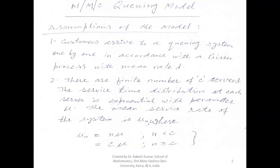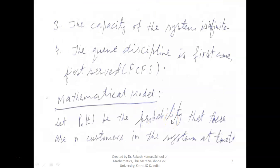So whenever n is c, c+1, c+2 and so on, the mean service rate would be c*mu, because there are only c servers and it cannot be more than that. Every time it is c*mu. In the earlier case, when the number of customers in the system are less than the number of servers, it is n*mu. The capacity of the system is infinite and the queue discipline is first come first served.